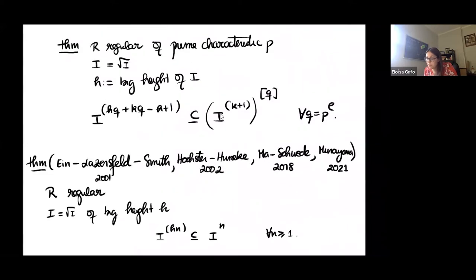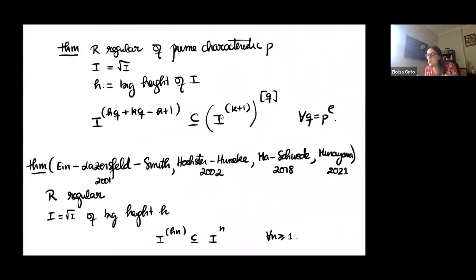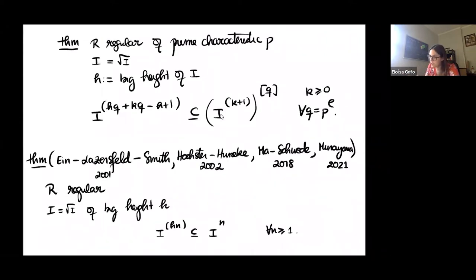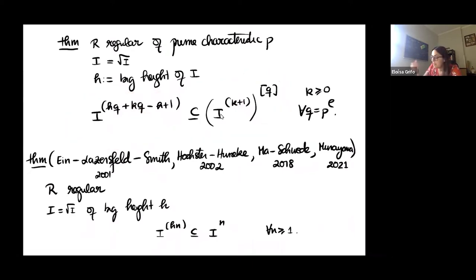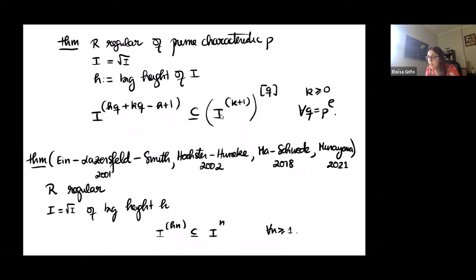I want to point out that if you follow the exact same proof we did, but apply the pigeonhole principle k times — so for k equals zero this is exactly the same — you can get a souped-up version by repeatedly applying the pigeonhole principle to keep getting things in the Frobenius power. The idea is to reduce to the local setting and realize you want to prove something about an ideal generated by h elements. You can look at my notes where there is a complete proof of the statements.